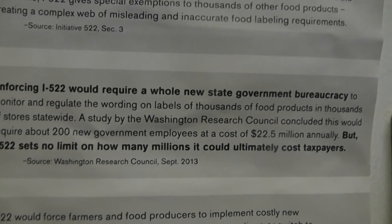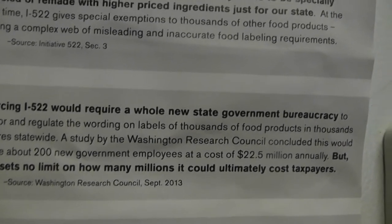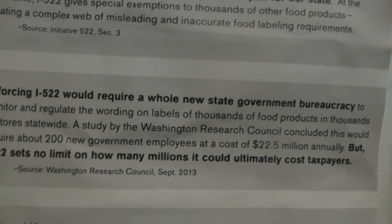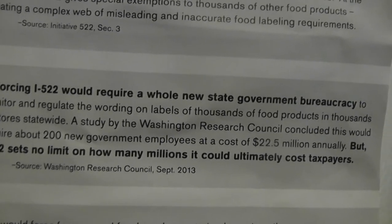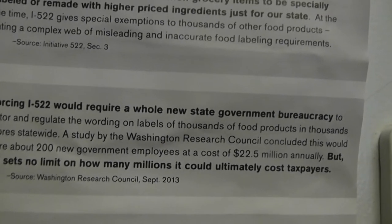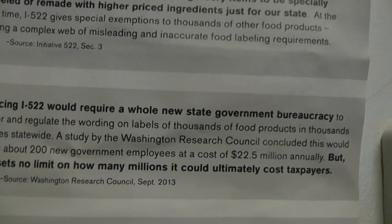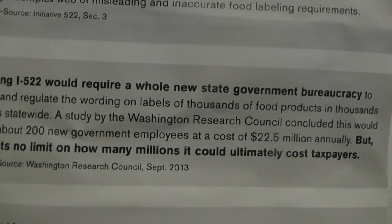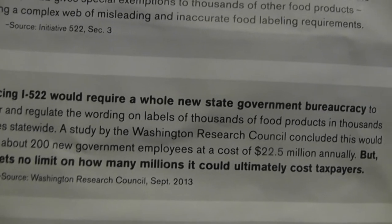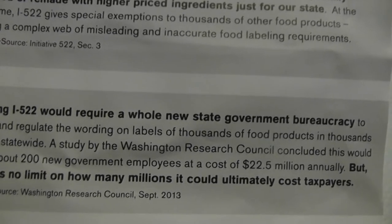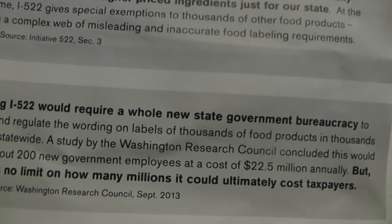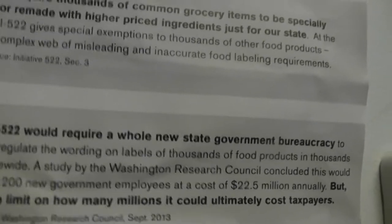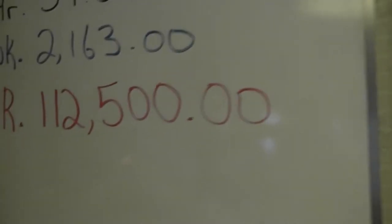It says enforcing I-522 would require a whole new state government bureaucracy to monitor and regulate the wording on labels of thousands of food products in thousands of stores statewide. A study by the Washington Research Council concluded that this would require about 200 new government employees at a cost of $22.5 million annually.